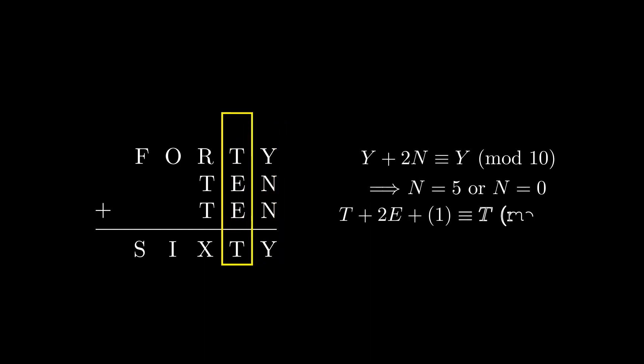Looking at the next column, we get a similar equation, except with the possibility of a carry from the first column. Let's suppose there was a carry. If so, then T plus 2E plus 1 would have a remainder of T when divided by 10. Notice that 2E plus 1 will always be odd, regardless of what you assign E. If T is even and you add an odd number to it, it will become odd. Likewise, if T is odd, adding an odd number will make it even. From this, we can conclude that it is impossible to divide T plus 2E plus 1 by 10 and get back the remainder T.